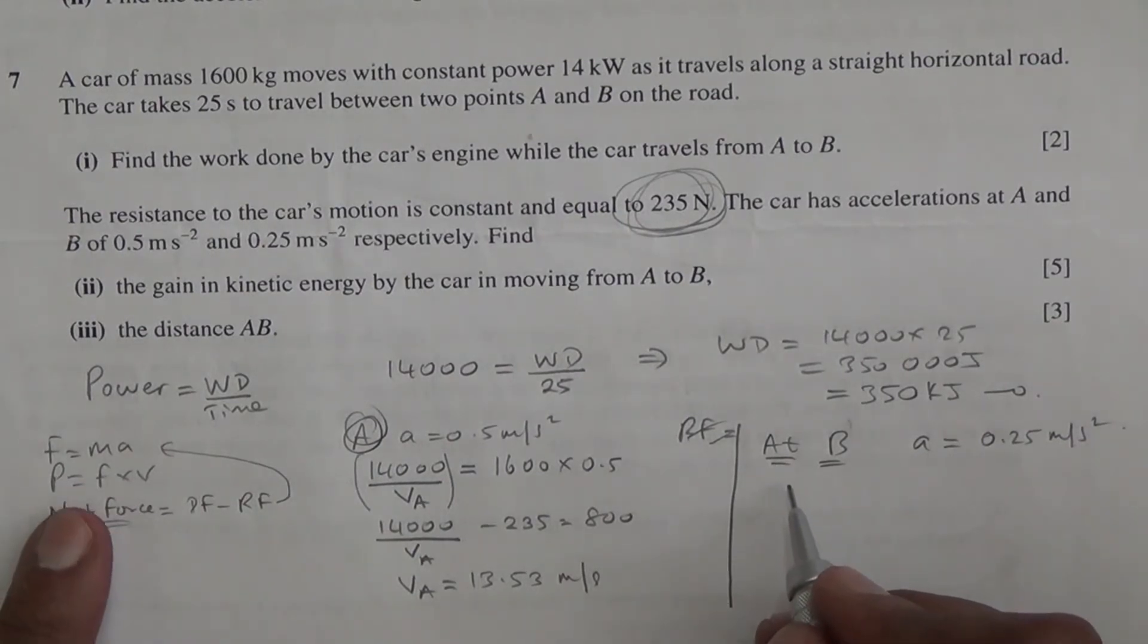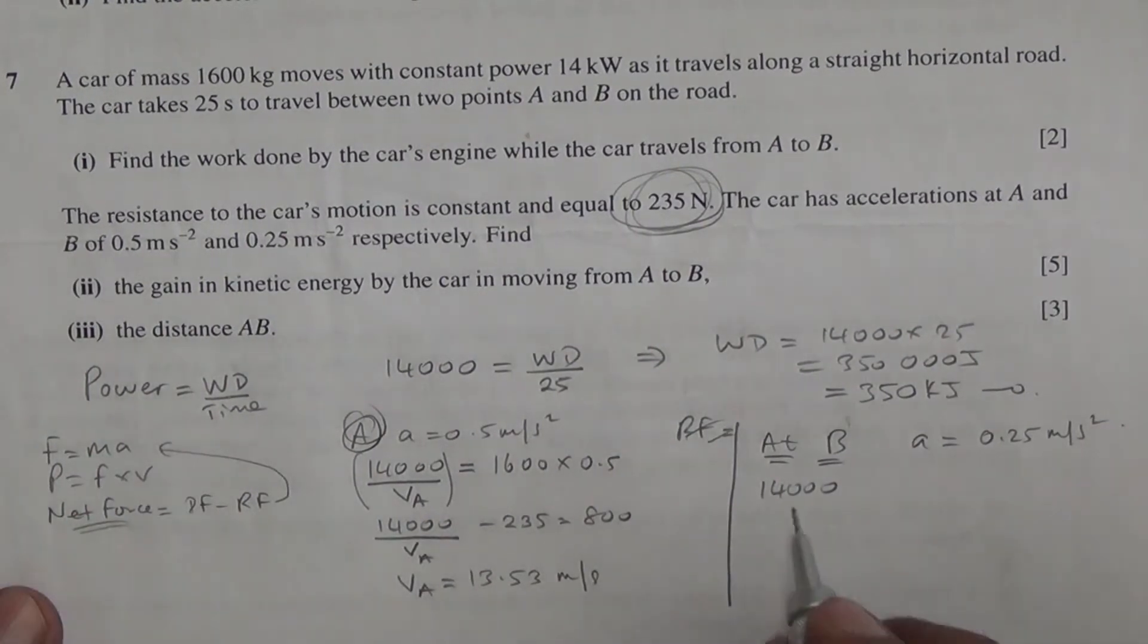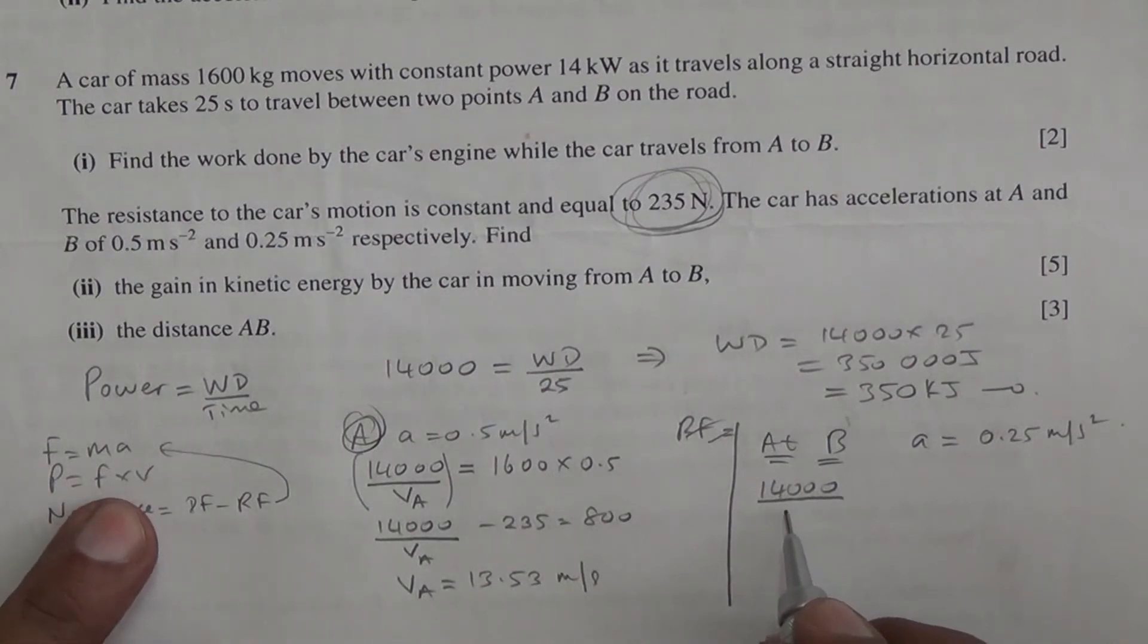And if you divide the velocity here, you're going to get the force. So divide by velocity. And the velocity at B is what we're trying to find out. Minus the resistive force. The resistive force is 235 newtons. You're going to get this as the net force. And the net force is mass times acceleration.